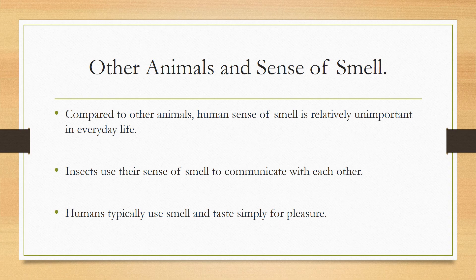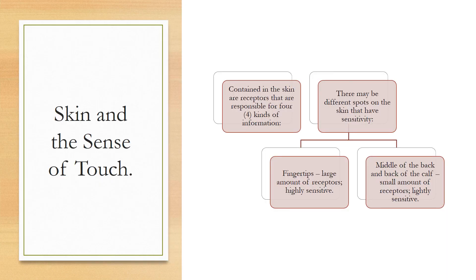Contained in the skin are receptors responsible for four kinds of information. Different spots on the skin have different sensitivity — for example, the fingertips have a large number of receptors, making them highly sensitive. If you prick your fingertip, it hurts quite a bit. By contrast, the middle of the back and the back of the calf have fewer receptors, so pressure there is less painful.